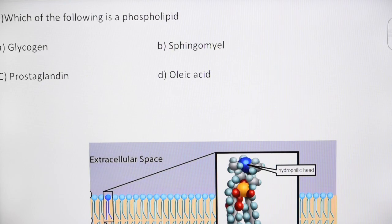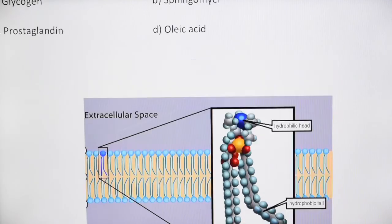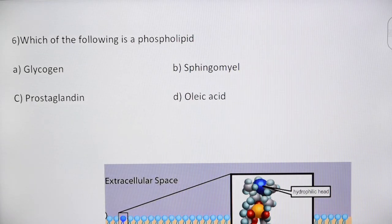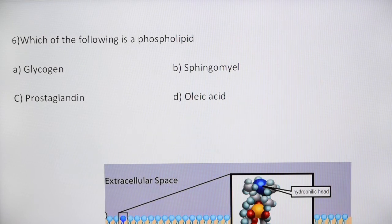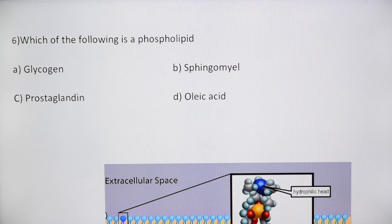Among the other options: glycogen is a multi-branched polysaccharide of glucose serving as energy storage in humans and eukaryotes; prostaglandins are lipid autocoids derived from arachidonic acid, with various COX selective and non-selective inhibitors; oleic acid is a fatty acid occurring naturally in animal and vegetable fats and oils. The correct answer — the phospholipid — is sphingomyelin, option B.